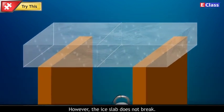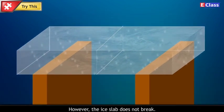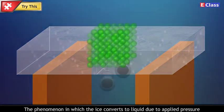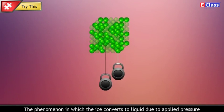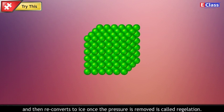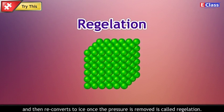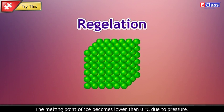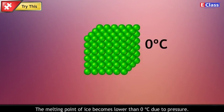However, the ice slab does not break. The phenomenon in which the ice converts to liquid due to applied pressure and then re-converts to ice once the pressure is removed is called regulation. The melting point of ice becomes lower than 0 degree Celsius due to pressure.